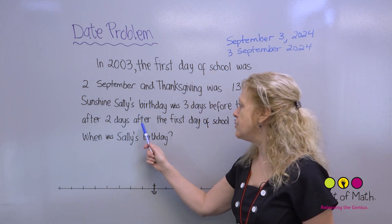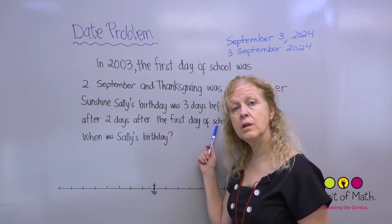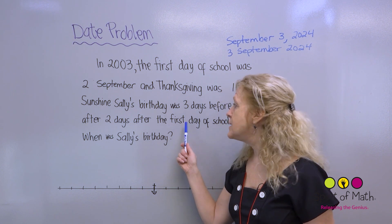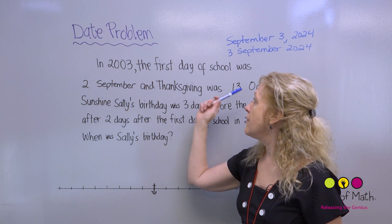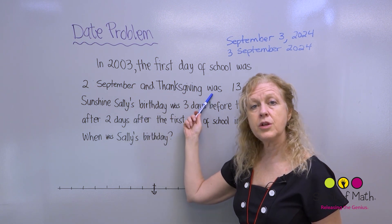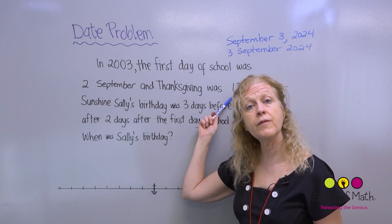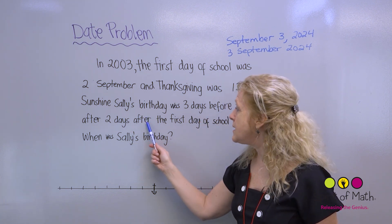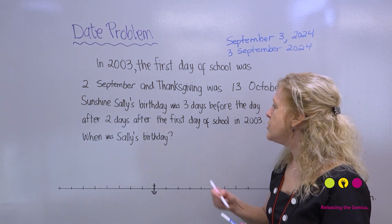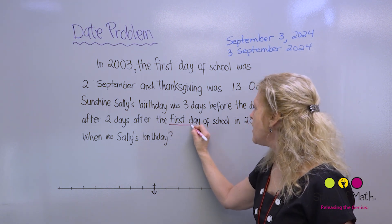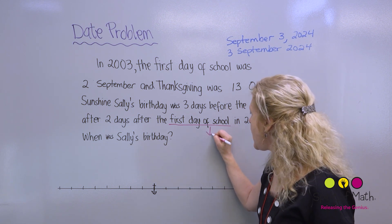So you first have to figure out where to start, because that's a lot. It's 3 days before the day after 2 days after the first day of school. Notice two dates were given, so you don't just pick one as a starting date — you have to figure out which one it is. Everything is based on the first day of school, so I'm going to underline that as what you call your anchor.